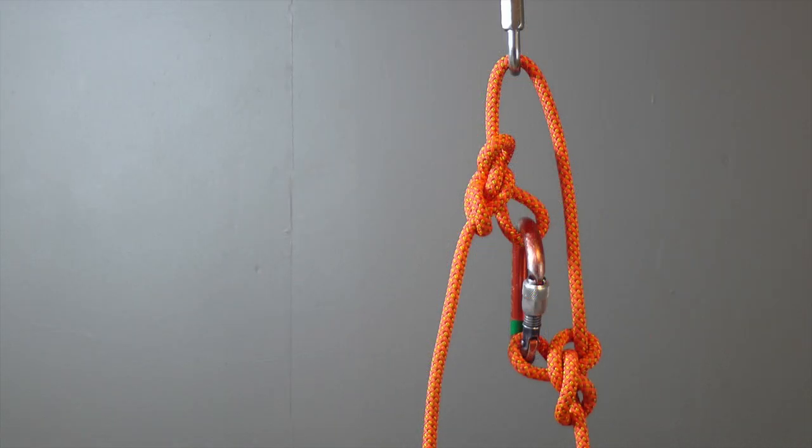A similar system involves tying two opposing butterfly knots on the ropes and clipping the loops together with a carabiner. Each of these systems will work, and they can be rigged with knots that you likely already know.